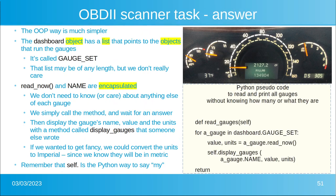The object-oriented programming way to do this is a whole lot simpler. The dashboard object has a list — gauge set — that points to all the objects that run the gauges. That list could be of any length: maybe two gauges, maybe 50 gauges. We don't really care how long it is. The list starts and ends, so we just go through the list. Read now and name are encapsulated in each gauge, so we don't need to know or care about anything else in the gauge.